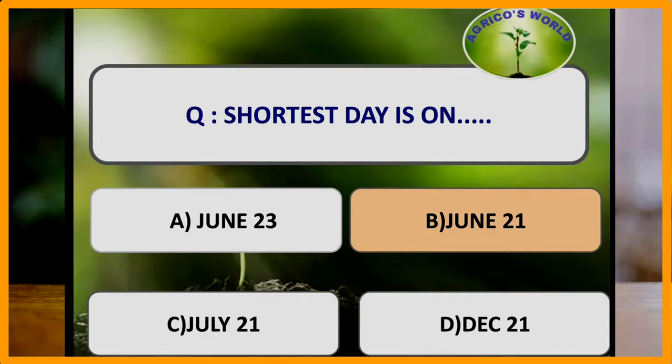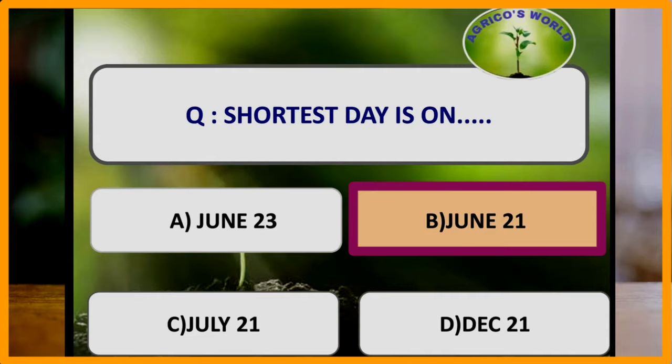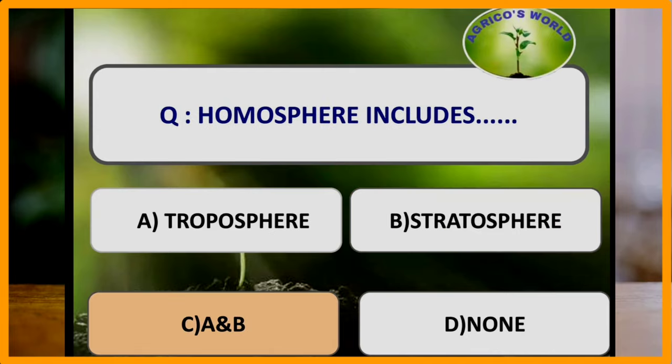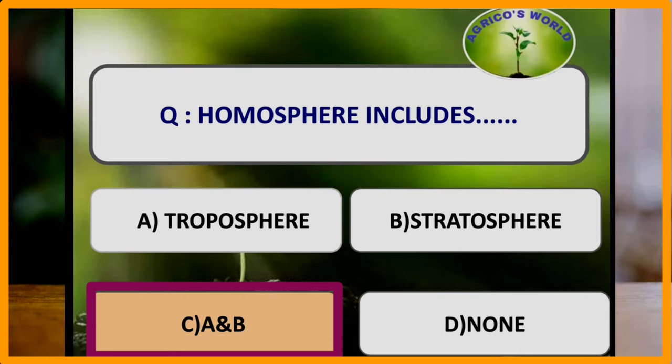Shortest day is on June 21st whereas the longest day is on December 21st. Homosphere includes troposphere and stratosphere, the first two layers of atmosphere. Troposphere and stratosphere are together called as homosphere.